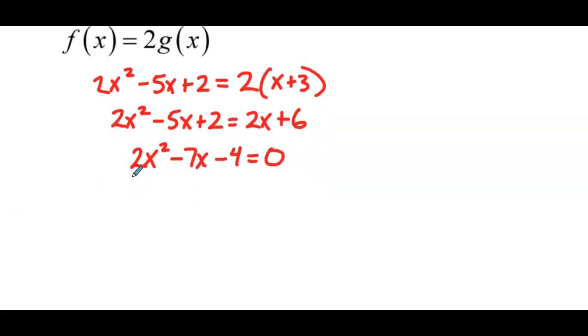Now we have a leading coefficient that is prime, so guess and check should work nicely. So our factors would start with 2x and x. So we need to think of factors of negative 4 that when we distribute our factors out, we would get negative 7x. So let's try negative 4 and positive 1. So we have negative 8x plus x, which is negative 7x. Perfect.